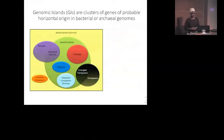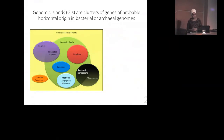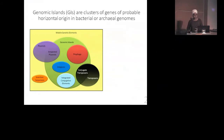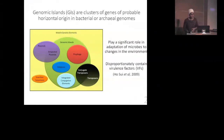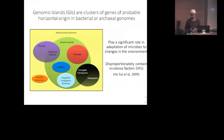To start, I want to introduce what are called genomic islands. These are clusters of genes of probable horizontal origin in bacterial or archaeal genomes, which means they can be shared between unrelated species. These can include prophages, integrons, and integrated conjugative elements, and they really contribute to the flexibility of microbes to adapt to changes in their environment. A lot of times genomic islands contain genes that encode alternative metabolism genes or resistance genes.